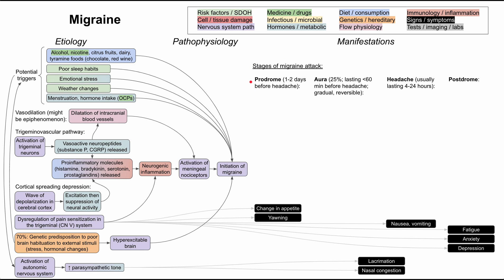Let's start with the prodrome. This is a series of symptoms that happens one to two days before the headache starts. These can include change in appetite and yawning — subtle changes you might notice. You might also notice difficulty reading and writing, as well as a change in mood — you might be happier or sadder, eating more or less, or have difficulty concentrating.